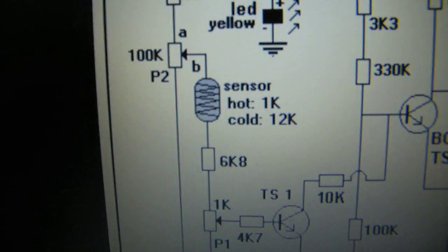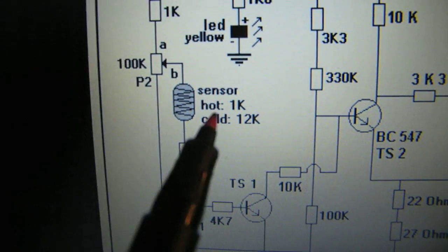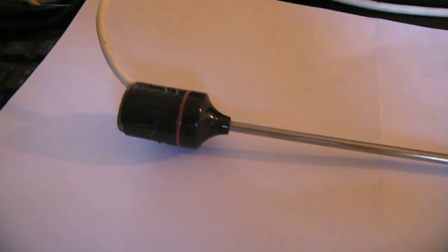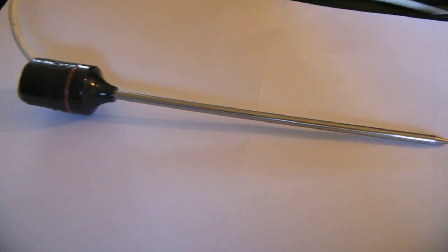This is the sensor. When it is hot, it is 1000 ohms. When it is cold, it is 12,000 ohms. And I've used this sensor in that circuit when I tested it.